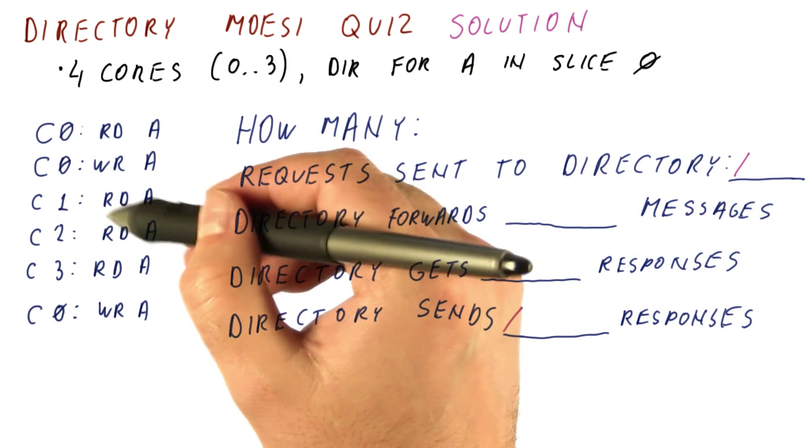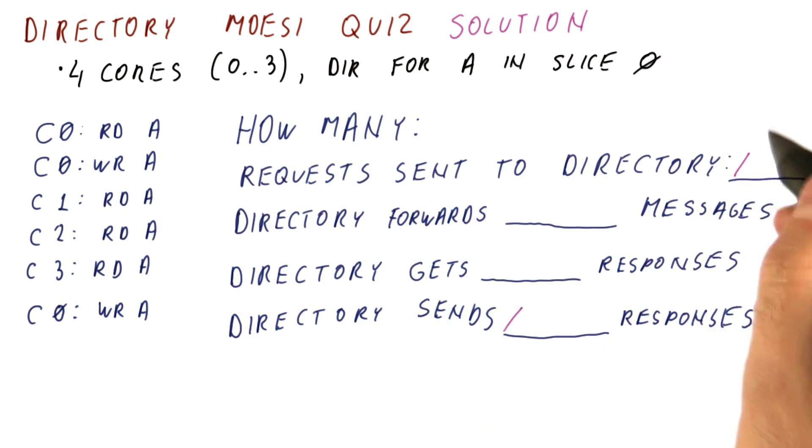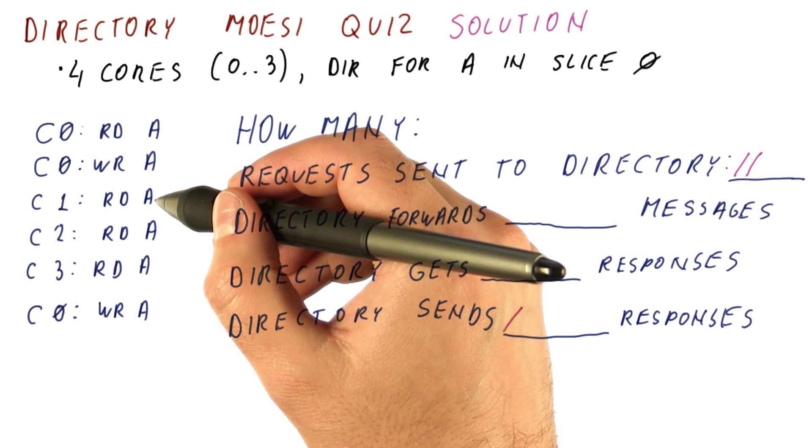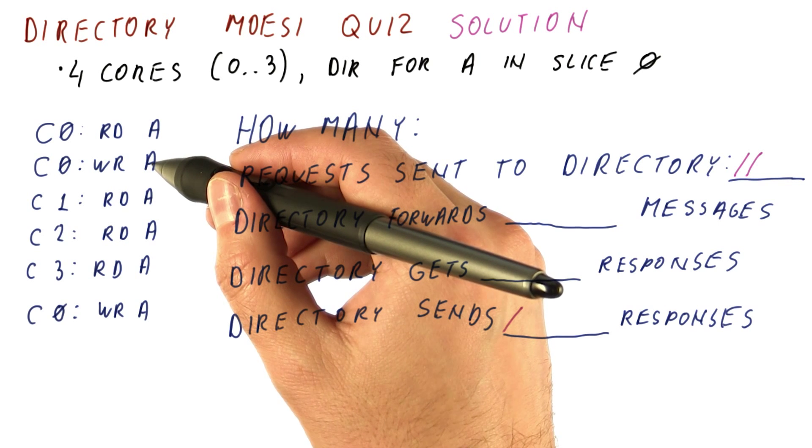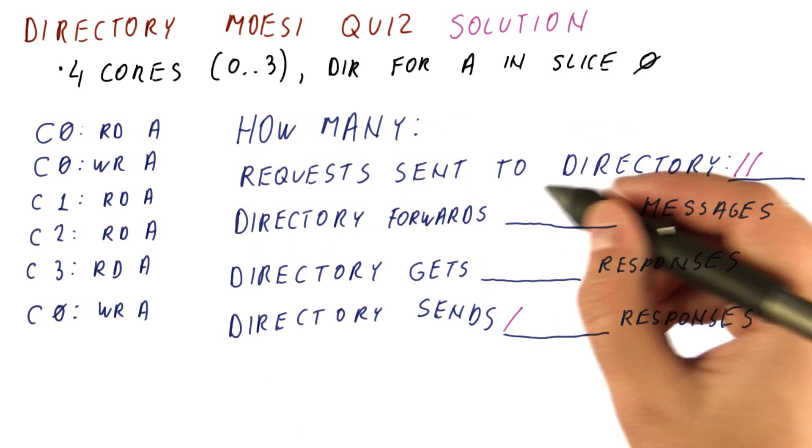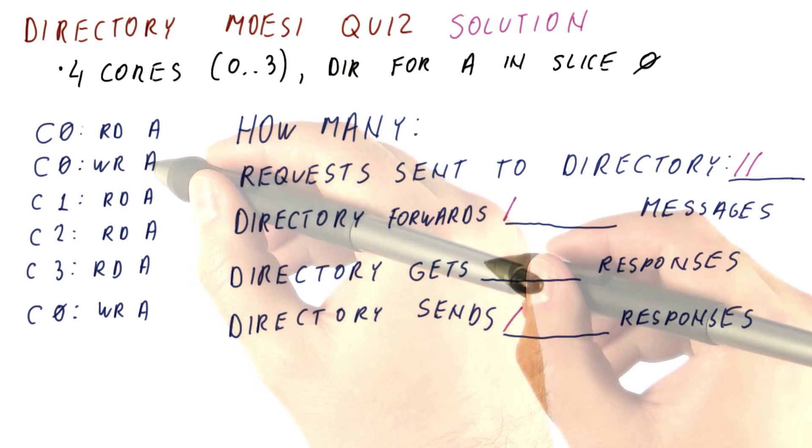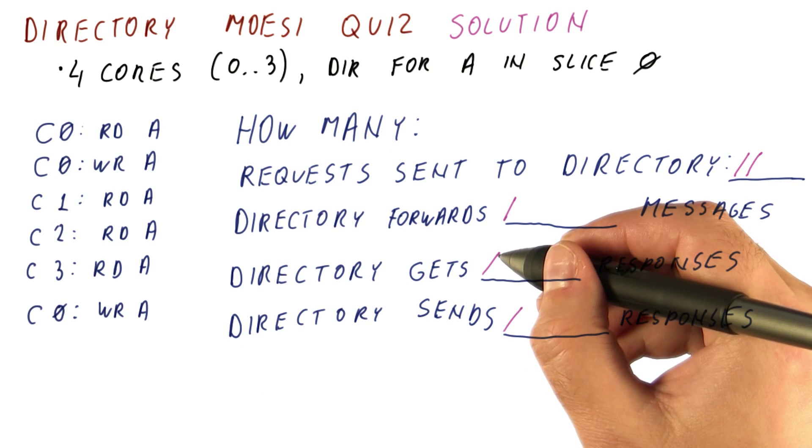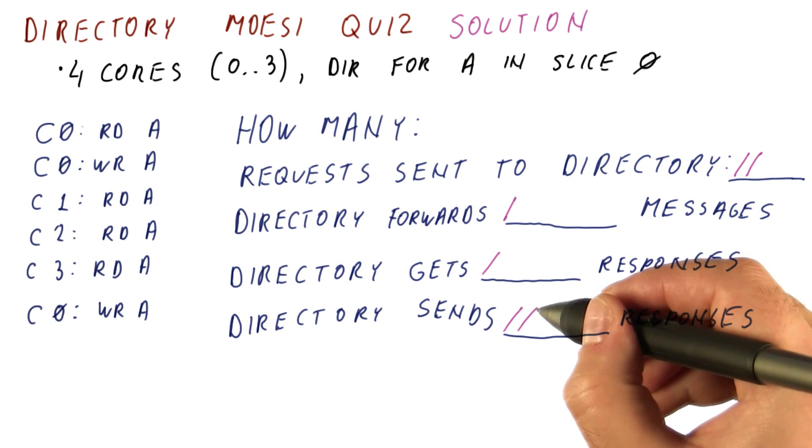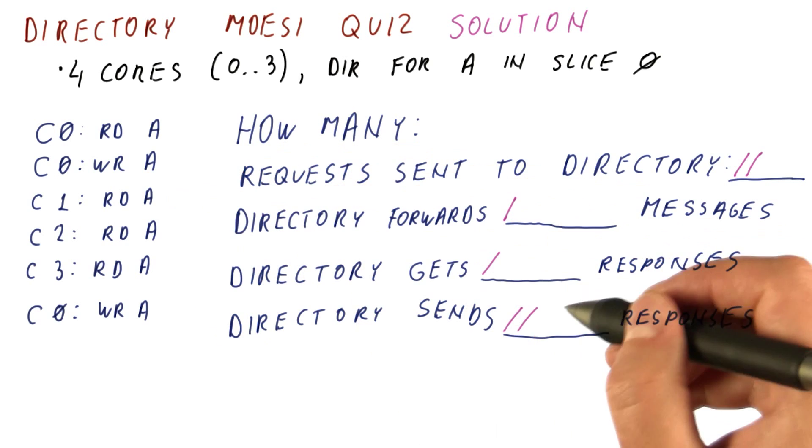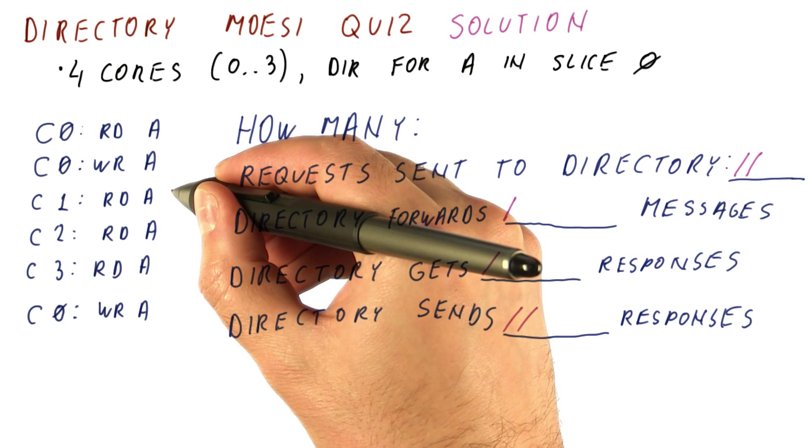When core 1 reads A, it sends a request to the directory. The directory will now send a request to the only core that is involved in sharing this block, which is core 0. So it sends one message. Core 0 responds with the data and acknowledges that now it's okay to read this block. When the directory gets this message, it sends to core 1 a response. Now core 1 can read the block.